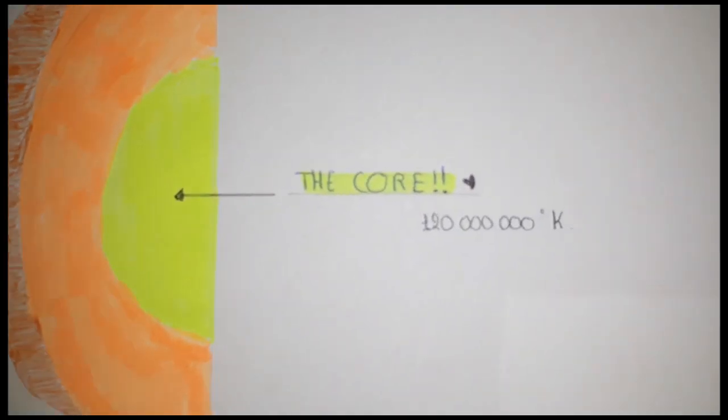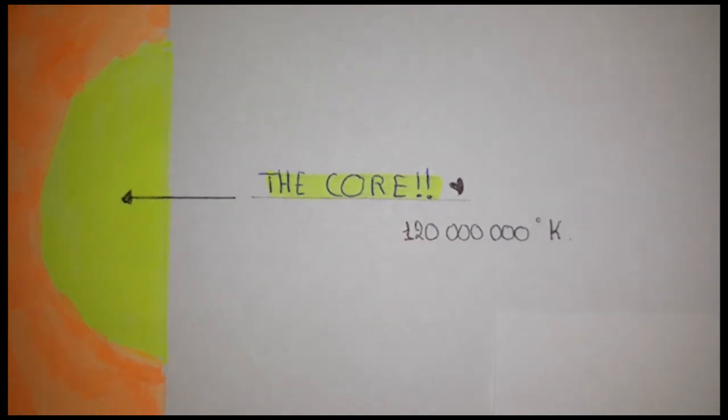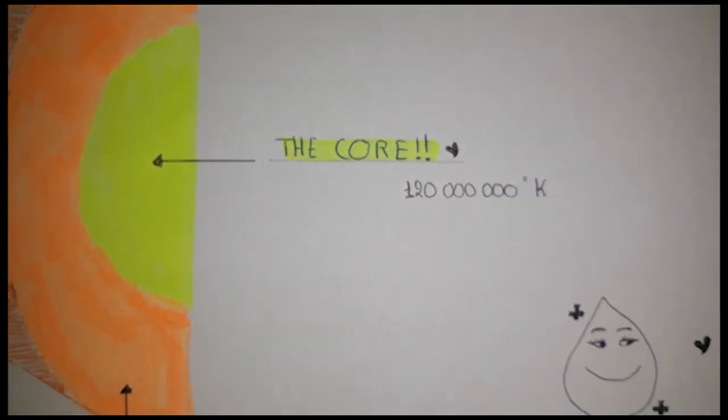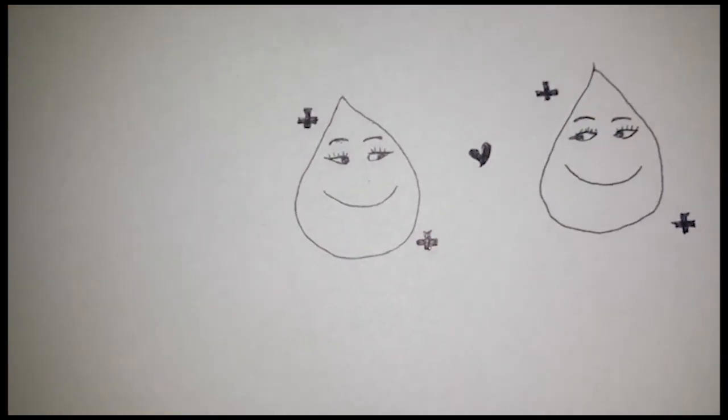But in the sun's core, there is an incredible degree of heat about 120 million degrees Kelvin. This temperature keeps the two protons as close as possible due to pressure.